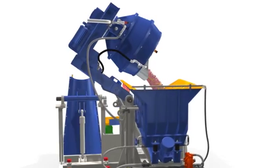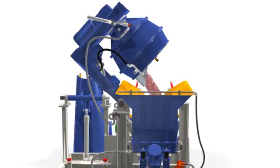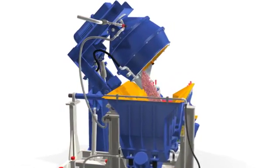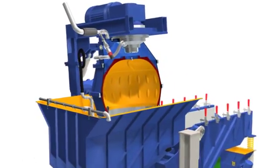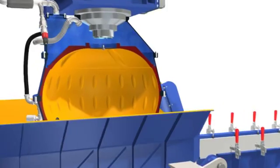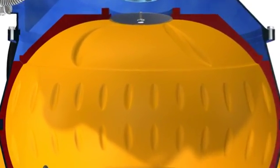First, the work bowl is raised and tilted to an angle of 135 degrees, followed by a second tilting step up to 178 degrees. This ensures gentle and complete unloading of parts and media into the intermediate hopper.